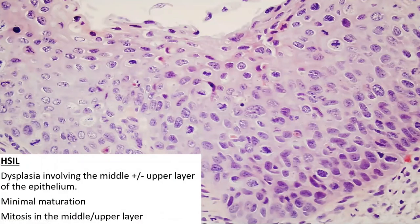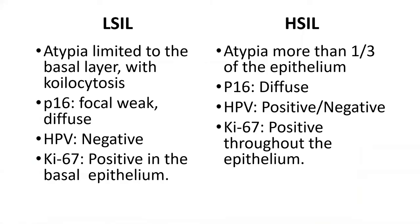Coming to high-grade squamous intraepithelial lesion (HSIL): here the dysplasia is not limited to the lower third of the epithelium. We can appreciate mitosis throughout and there is lack of maturation. The differential can be difficult especially in small biopsies, so we can seek help from immunohistochemistry. p16 — if focally or weakly positive — goes with LSIL, but if diffusely positive, this is most likely HSIL. Ki-67 will be positive only in the basal layer in low-grade, but positive throughout the epithelium in high-grade.